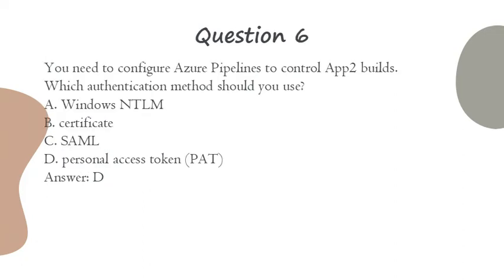Question 6. You need to configure Azure Pipelines to control App-2 builds. Which authentication method should you use? A. Windows NTLM. B. Certificate. C. SAML. D. Personal access token (PAT). Answer: D.